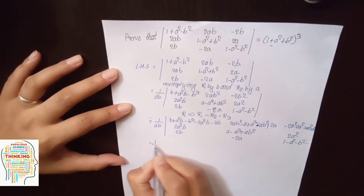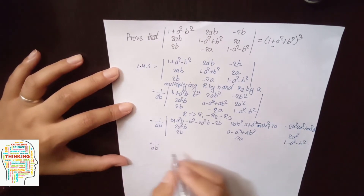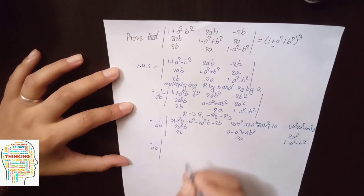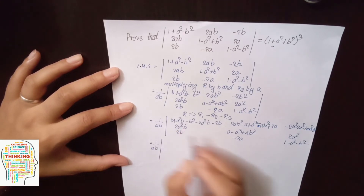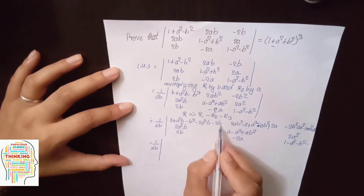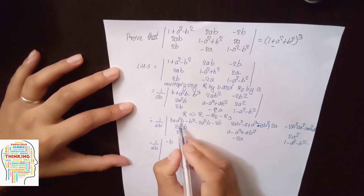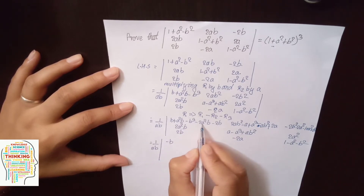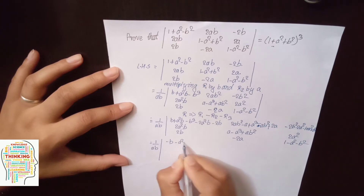1 by ab, 1 by ab. And R2: b, b minus 2b minus b, and a²b minus 2a²b minus a²b.